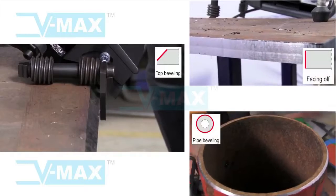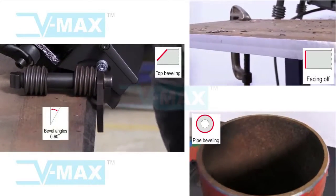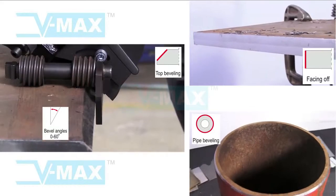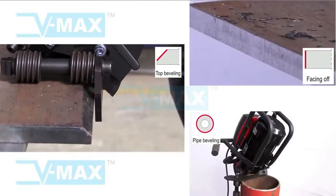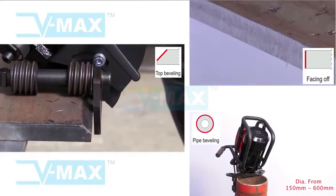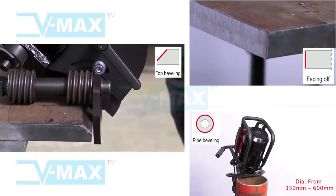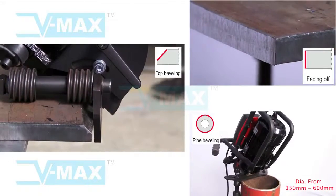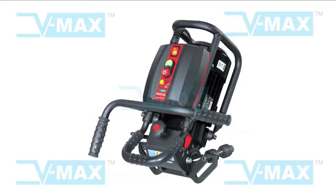It can make bevels up to 21mm width, bevel angles from 0 degrees to 60 degrees, and facing off plate edges and bevel pipes from 150mm diameter up to 600mm diameter. Beetle comes with state of the art features.